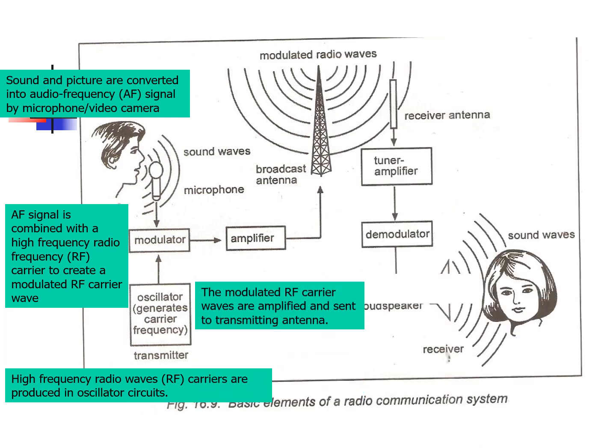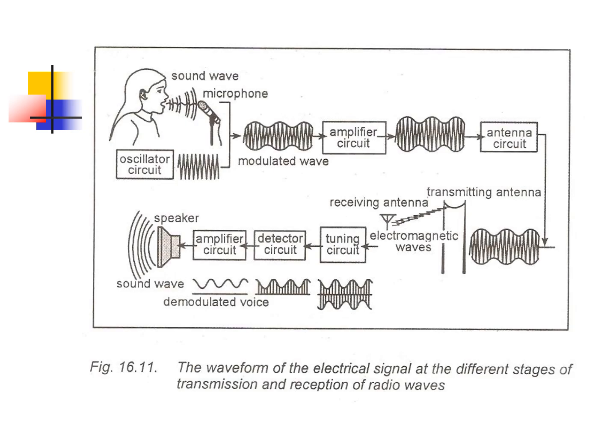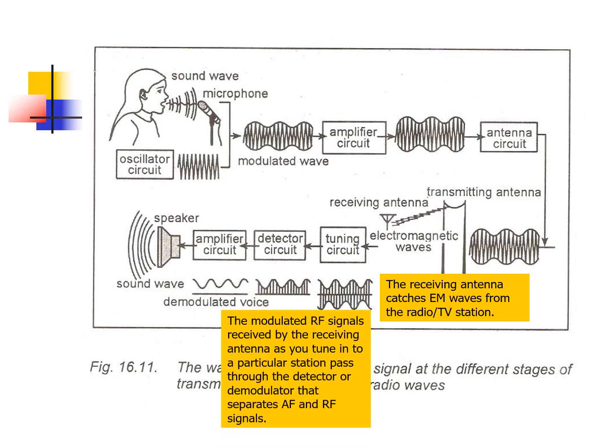The AF signal is combined with the RF carrier to create a modulated RF carrier wave — this process is called modulation. The modulated RF carrier waves are then amplified and sent to the transmitting antenna. Finally, the transmitting antenna sends out EM waves in all directions.